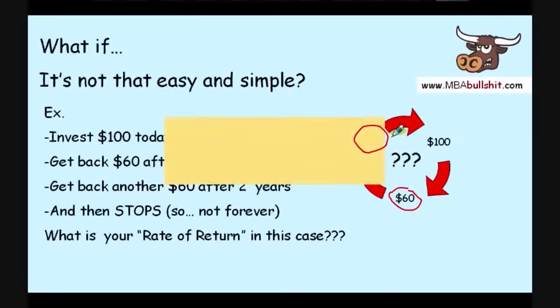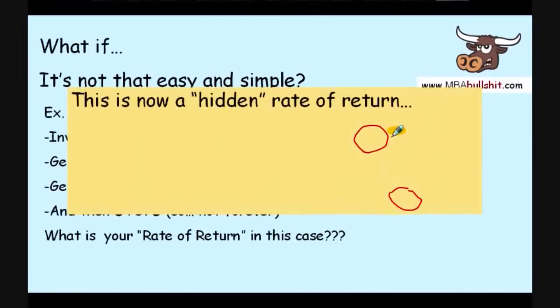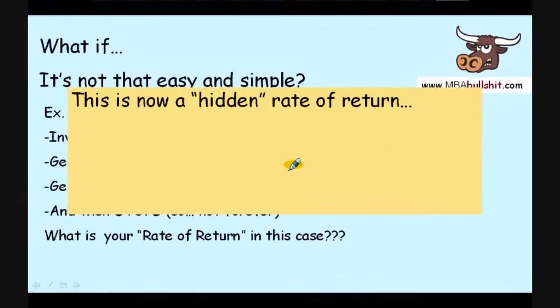So, in this case, the rate of return is now hidden. Now, when I say hidden, I just mean that it's not easy to see immediately what is the rate of return, unlike in the last example where it was very easy to see that the rate of return was 3%. But in this case, it's not easy to see it. Therefore, it is hidden.